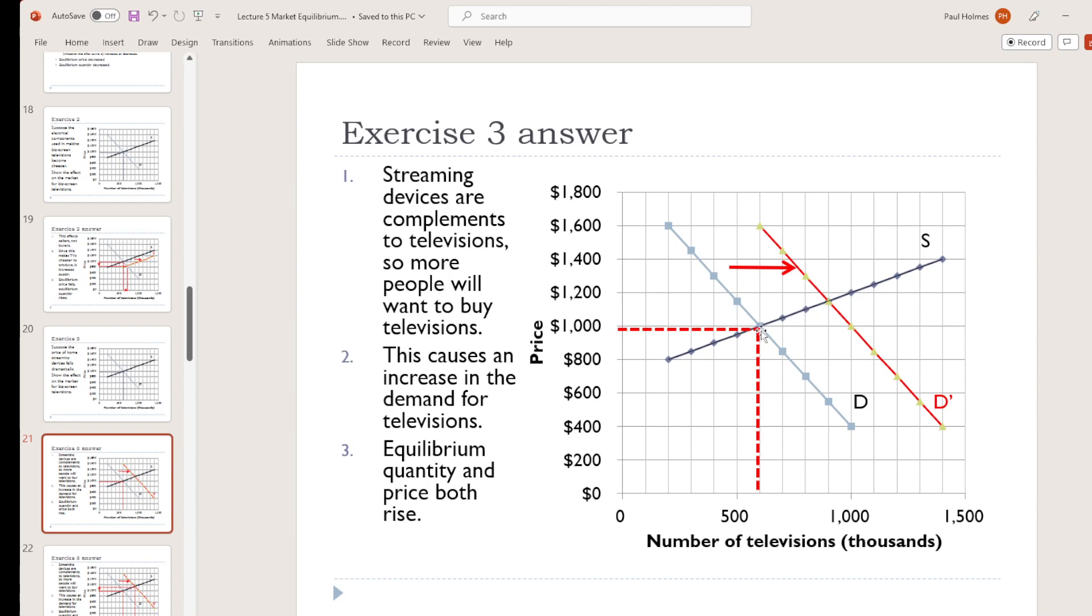There was our original equilibrium. We've shifted our demand curve over to the right. We've got a new equilibrium point. There it goes. I've labeled it out. And overall, our equilibrium price rose. Our equilibrium quantity rose.